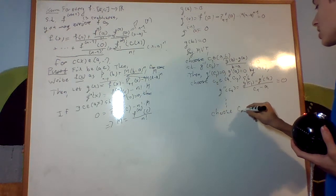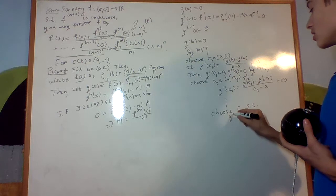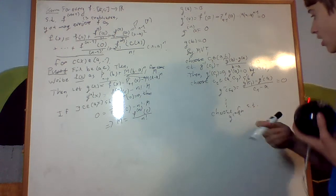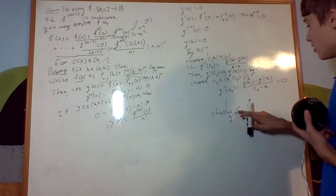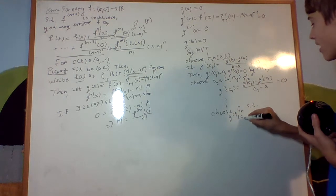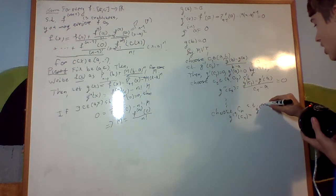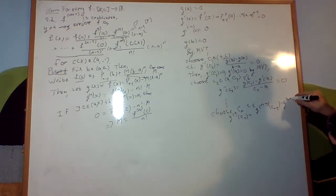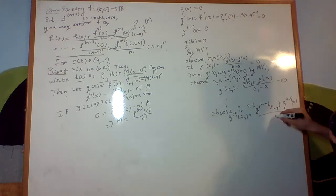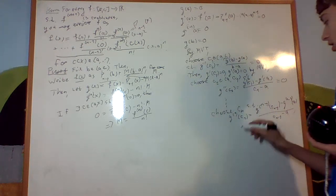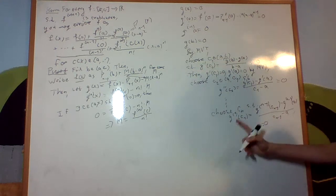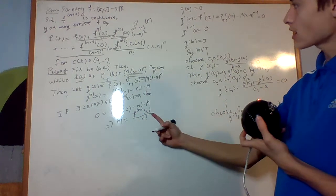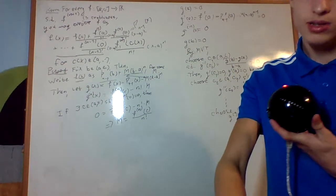choose cn such that the nth derivative of cn is going to be the n minus 1 derivative of cn minus 1 minus the n minus 1 derivative of a over cn minus 1 minus a, and then, equals 0, and thus, we found our cn such that this works, and thus, we can write it as that, and thus, the theorem's proven, and it's complicated.